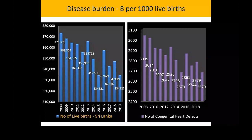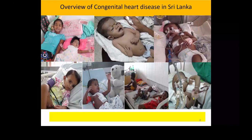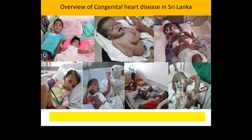There is a graph showing the number of live births from 2008 to 2019. We have about 330,000 to 370,000 babies born each year, and the birth rate has been coming down over the past ten years. Putting the equation of eight per thousand live births, roughly about 2,500 to 3,000 children will be born each year with some sort of congenital heart disease in our country.